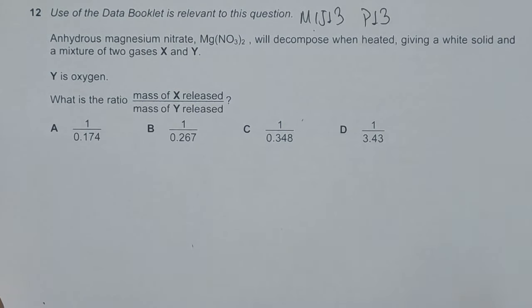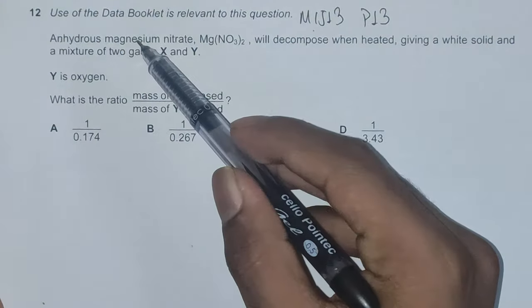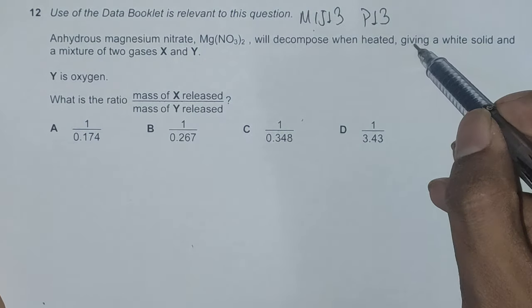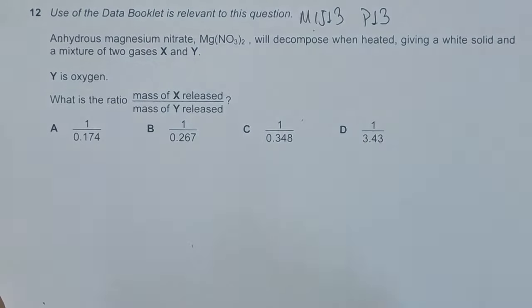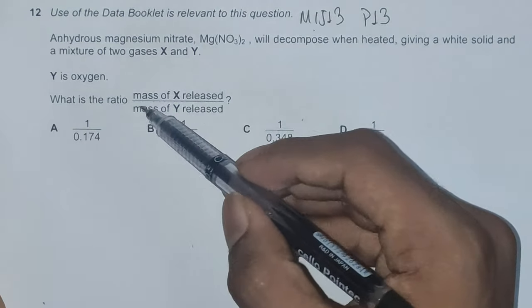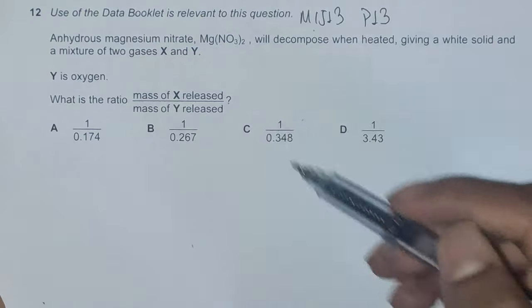It's concerned with the chapter Group 2. The question reads: Anhydrous magnesium nitrate will decompose when heated, giving a white solid and a mixture of two gases X and Y. Y is oxygen and what is the ratio of mass of X released to the mass of Y released.